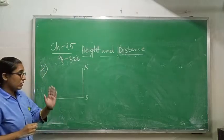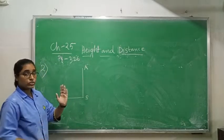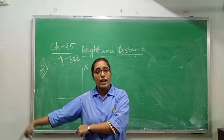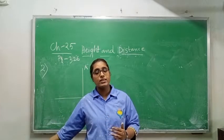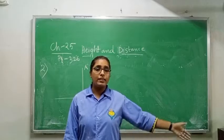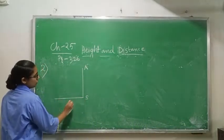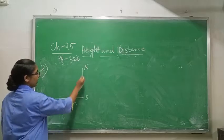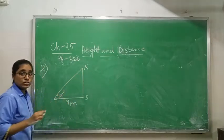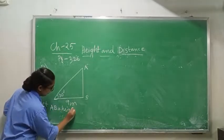Now read question number 2. 'The length of a shadow of a tower is 9 meters when the sun's angle of elevation is 30°. Find the height of the tower.' The length of the shadow is given as 9 meters and the angle of elevation is 30°. We have to find the height of the tower. AB is the height of the tower and BC is the shadow — when you are standing, your shadow falls on the base like this.